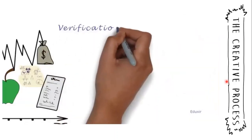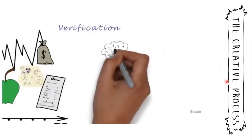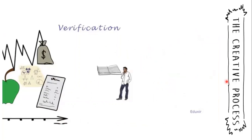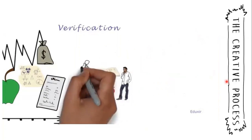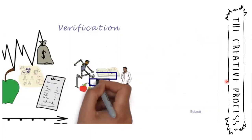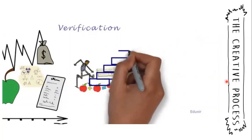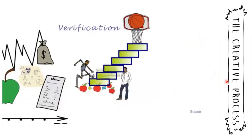Verification: in this stage, the idea is turned into reality and the entrepreneur will start monitoring the outcome. The entrepreneur will start seeing obstacles and take necessary steps to overcome them to move the enterprise towards its goal. That's all about the various stages involved in the creative process.